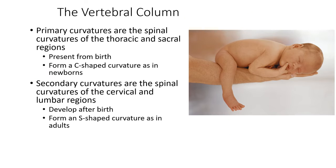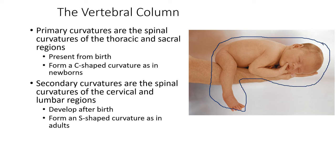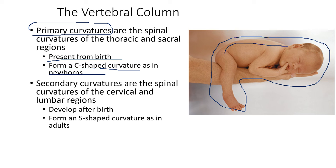When we were newborns, the shape of our vertebrae forms what we call primary curvatures — the spine curvatures of the thoracic and sacral regions present from birth, forming a C-shaped curvature as a newborn.